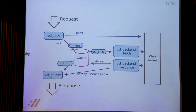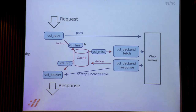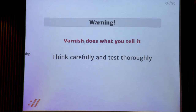Regarding Vary with Varnish: the cache key is always the same regardless of the Accept header. Under that key, Varnish finds multiple responses. The Vary information on those responses lets Varnish figure out which variant matches the current request's Accept header. So you have one hash key with multiple cached variants underneath it.